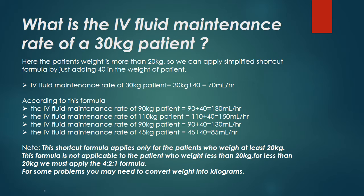The intravenous fluid maintenance rate of a 45 kilogram patient equals 45 + 40 = 85 milliliters per hour. Note: this shortcut formula applies only for patients who weigh at least 20 kilograms. This formula is not applicable to patients who weigh less than 20 kilograms. For patients less than 20 kilograms, we must apply the 4-2-1 formula.